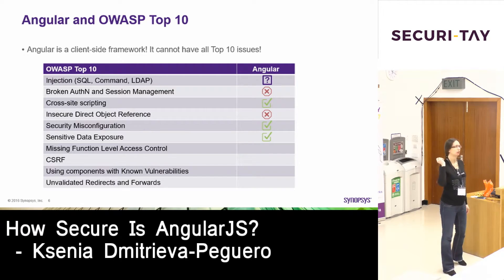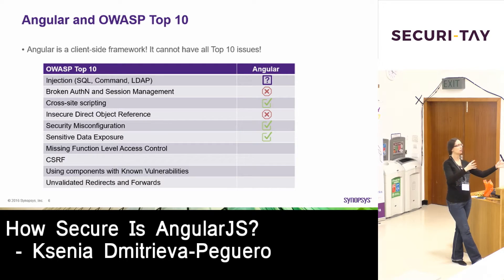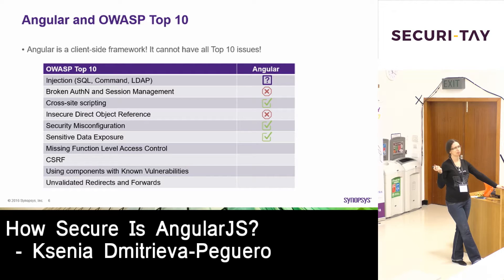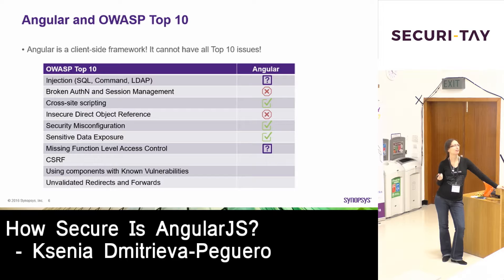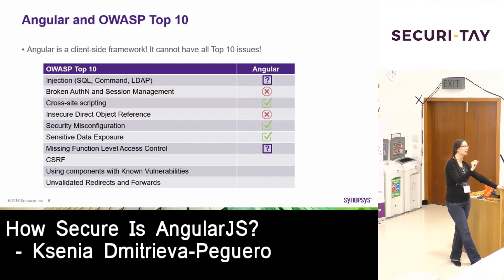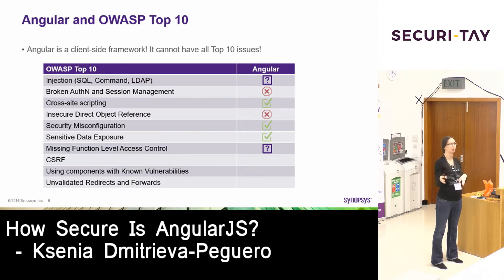Missing function level access controls — easier to say: authorization. Does that apply to the front-end? Authentication is proving you are who you are; authorization is what you can do, your role and rights. We should not check rights on the client side. If you do authorization on the client side in Angular, that's a problem. Funny enough, if you look up Angular authorization on Stack Overflow, articles will tell you how to do that and somewhere in fine print say 'also validate on the server.' If you're a developer copy-pasting from Stack Overflow, you'll end up checking all rights on the client side — and that's going to be a problem.